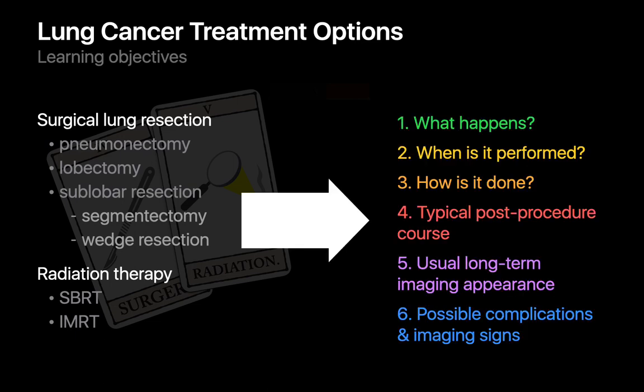Those six issues are: what happens; in what situations is the treatment used; how it is performed; what a normal post-procedure course is like; what you should expect to see on medical imaging after treatment; and finally, post-procedure complications that could occur and how they might appear on medical imaging.